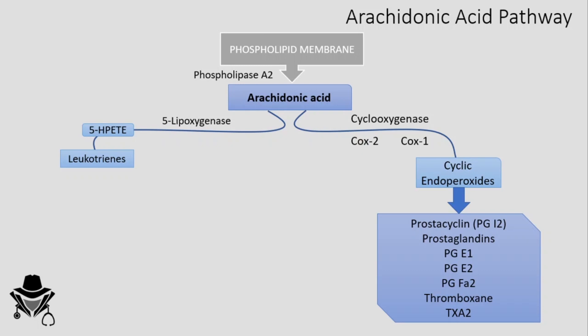On the other hand, the 5-lipoxygenase enzyme will produce 5-HPETE, which will also produce different leukotrienes such as leukotriene B4, C4, D4, and E4. There is much more in the steps and metabolites, but these are the ones that are well studied and clinically important.